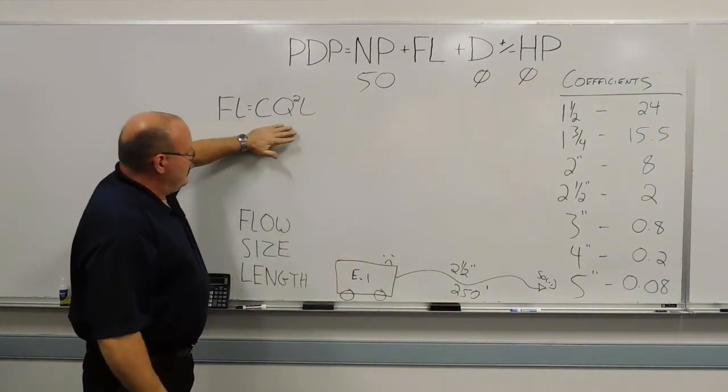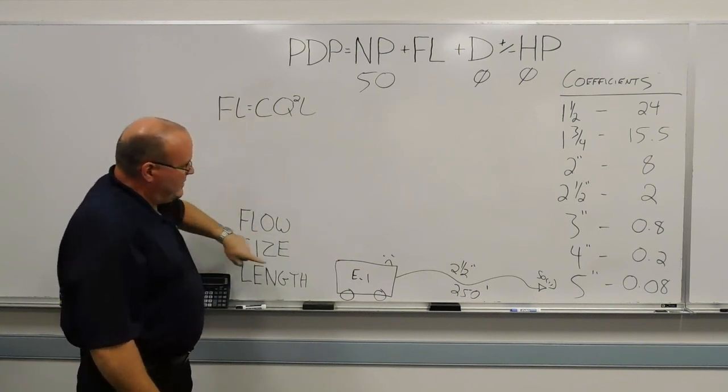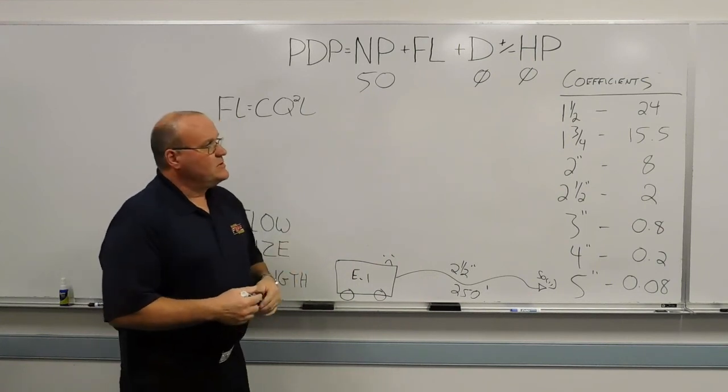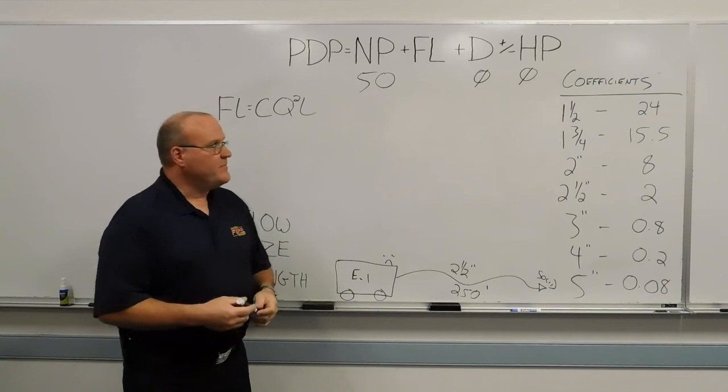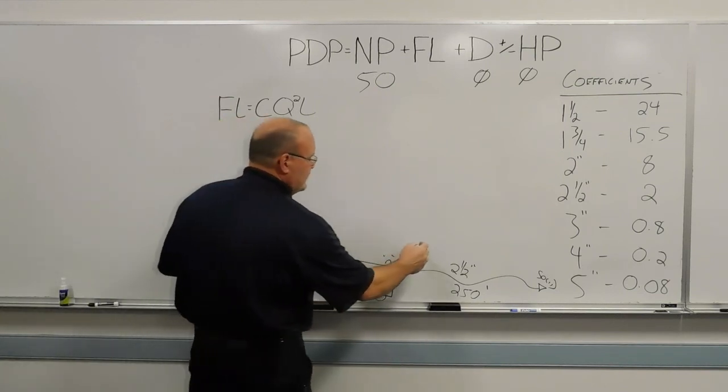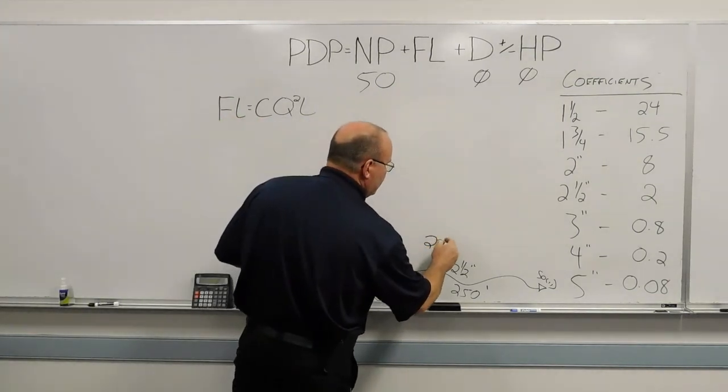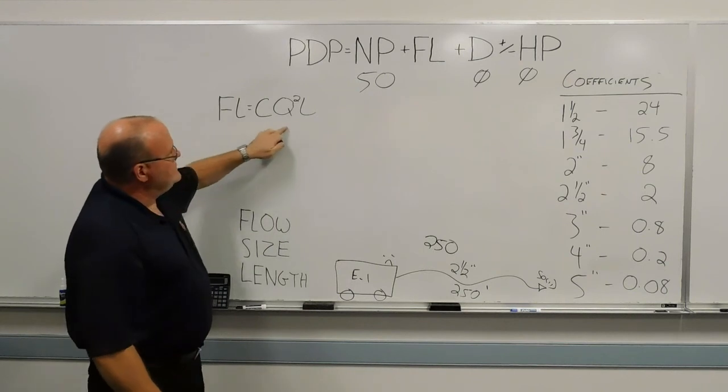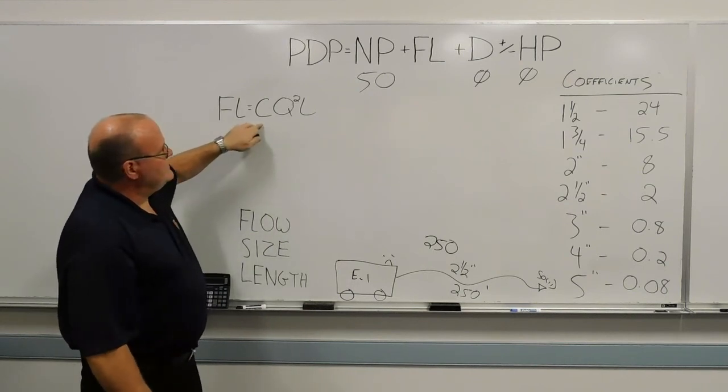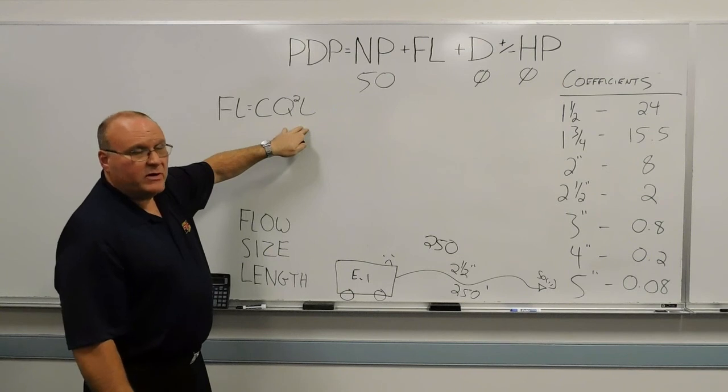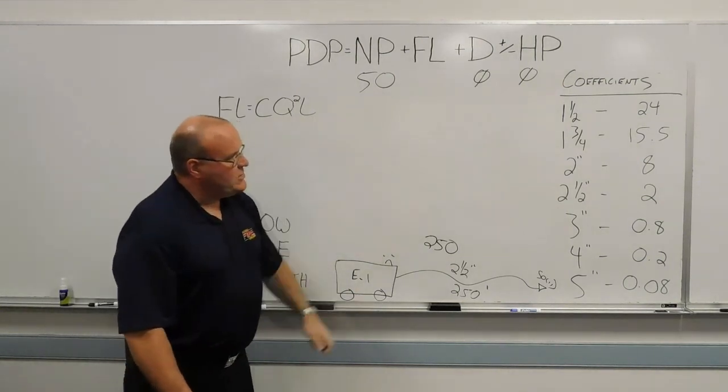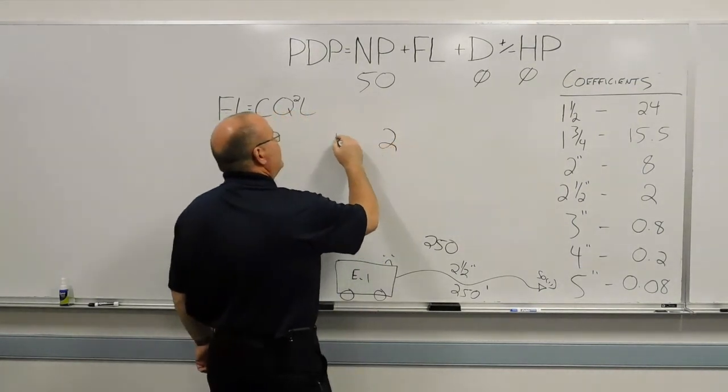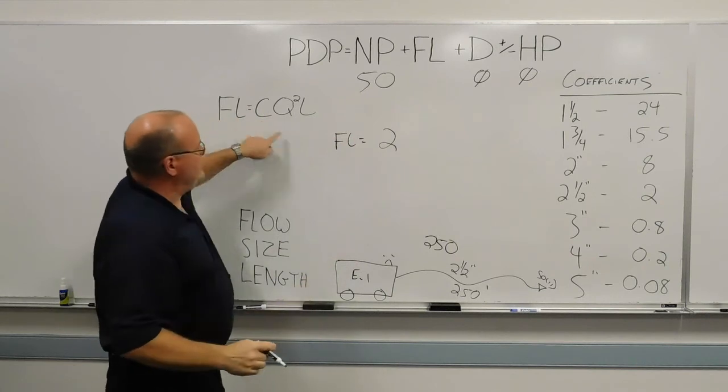So, CQ²L, flow size and length. So the flow on our 250 foot, two-and-a-half-inch hose line, we're going to use a number of 250 gallons a minute. So the flow, 250 gallons a minute. The size of hose, two-and-a-half, and the length, 250. So when we plug all these numbers in this formula, CQ²L and the Q and the L are divided by 100. So the C coefficient for two-and-a-half-inch hose is two. So FL equals the C is two.